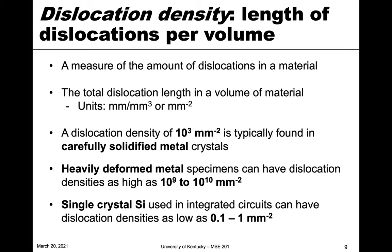We have these dislocations — edge, screw, or some type of mixed dislocation — and the amount of dislocations in a material is an important parameter for understanding its properties. We look at what we call dislocation density: how many dislocations are there per unit volume? Since a dislocation is a linear defect, there will be a length of dislocation, so it's length of dislocation per volume, giving units of length over length cubed, or one over length squared.